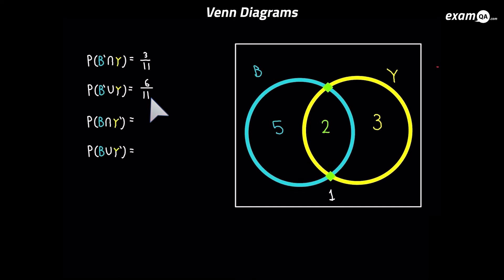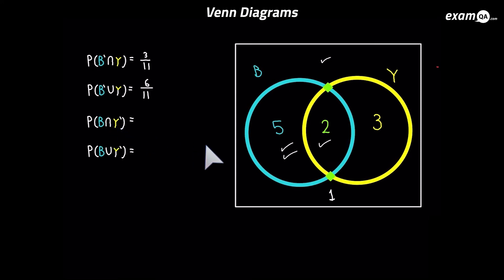If you'd like to have a go at the next two, pause the video and take five minutes. Tick every place with B and every place with not Y, including the outside. It's an intersection question, so it wants both — we're just looking for the places with a double tick, and it's just simply the 5. So it's 5 over the total: 5 over 11.